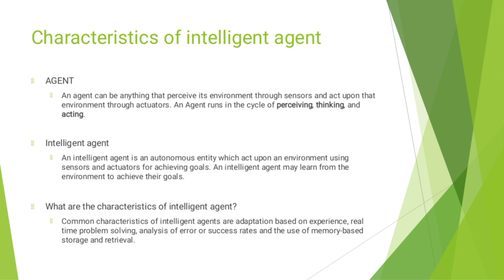Agents include devices such as cell phones, cameras, and even VR. A sensor is a device which detects the change in the environment and sends the information to other electronic devices. Actuators are the components of machines that convert energy into motion — for example, electric motors, rails, etc.